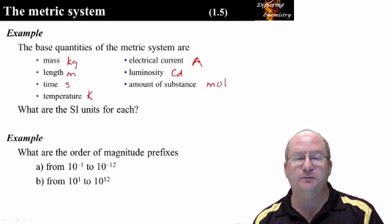Now let's look at the order of magnitude prefixes of the metric system. Please pause this presentation and write down the prefixes for the order of magnitude from 10 to the minus 1 to 10 to the minus 12 and from 10 to the 1 to 10 to the 12.